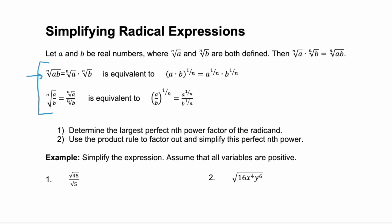And this is also equivalent to the rational exponent format. The second rule is if we have a quotient. Again, we can keep the numerator and the denominator together under one radical sign, or we can separate them into two.